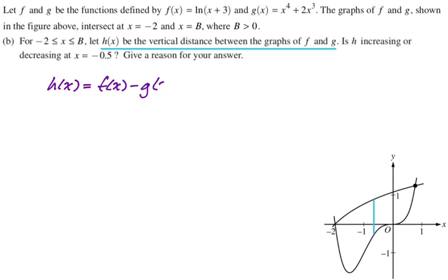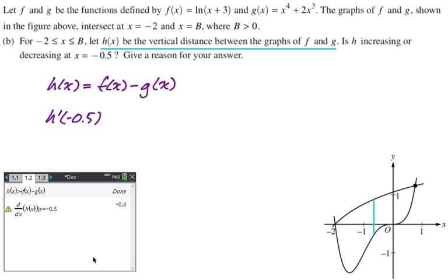And then the question is, is h(x) increasing or decreasing? So we're going to find the derivative. We're going to find h prime of negative 0.5. And it's calculator, so we're just doing it on the calculator. So I get h prime of negative 0.5 is actually exactly negative 0.6. It's not an approximation.